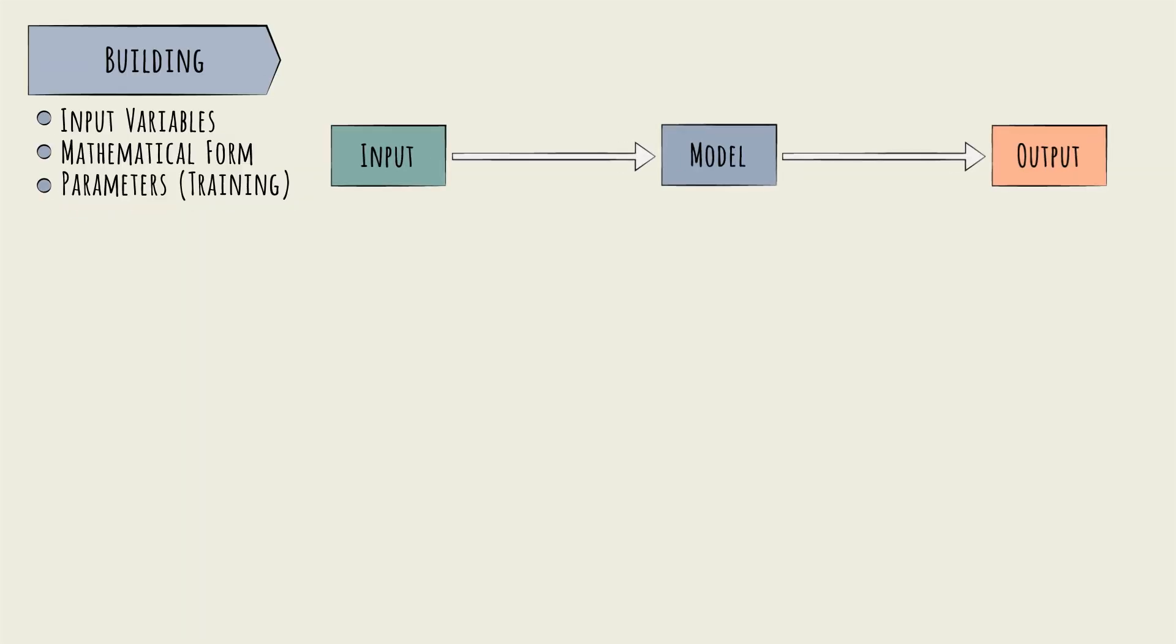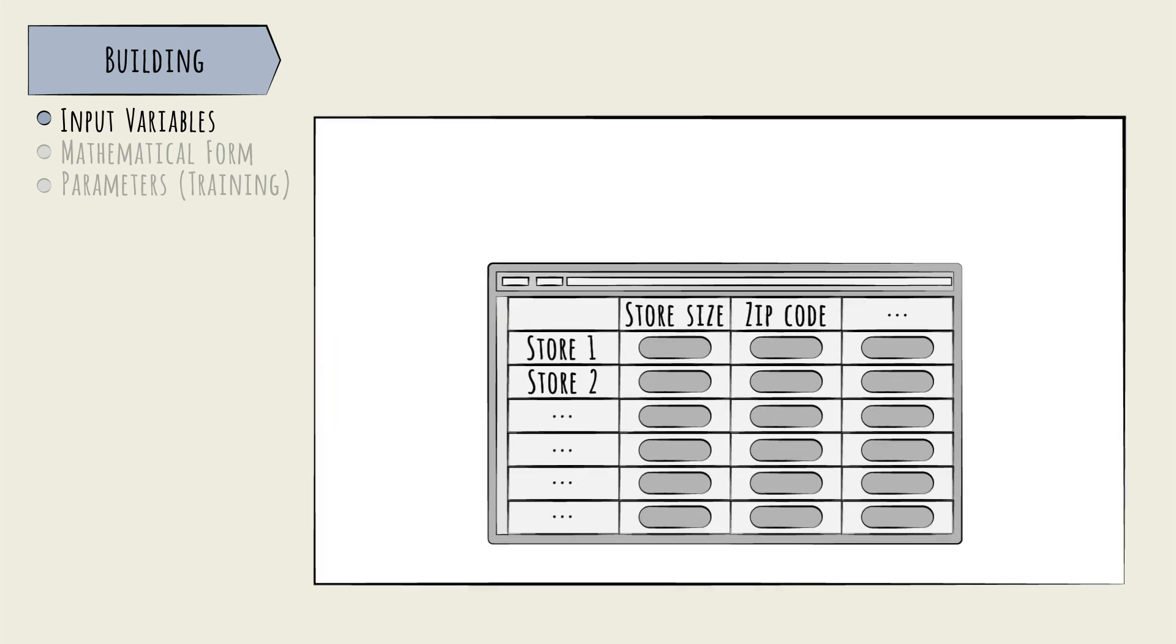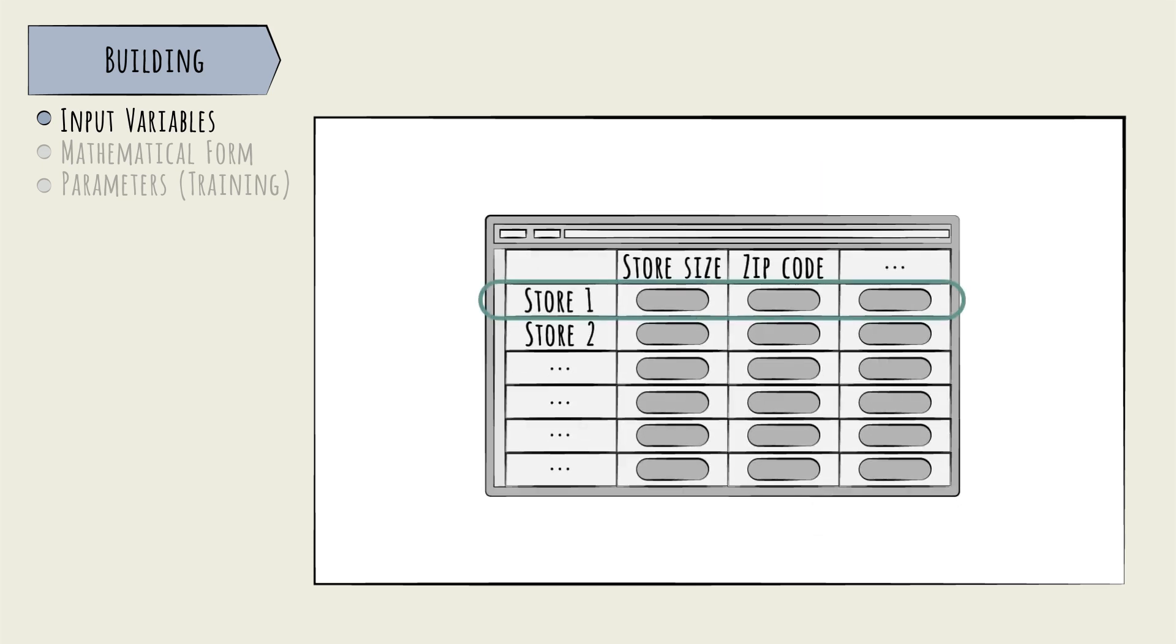Let's start with the first step – selecting the input variables. The input is clear – an image that either does or doesn't contain the letter t. But what are the input variables? The inputs we considered in our store sales regression were simple numerical values – store size and zip code, for example. This data was easy to assemble into a data table. Each row was a sample store, each column a different input variable. This is called structured data.